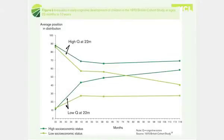This really begins very early in life. We had this graph also in the Marmot Review and it shows very young children — just under two — with a measure of cognitive functioning and development. The brightest kids are at the very top and those with lower cognitive function at the bottom; the dark green lines are the wealthiest kids and the pale green lines are the poorest kids. You can see what happens by the age of 10.